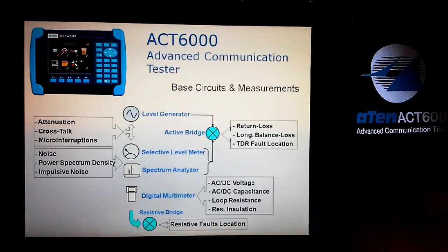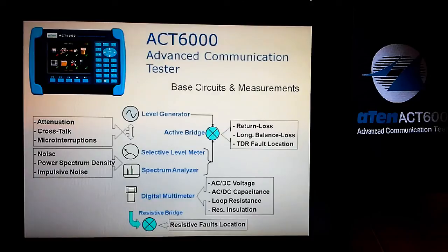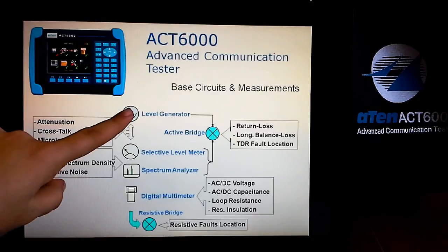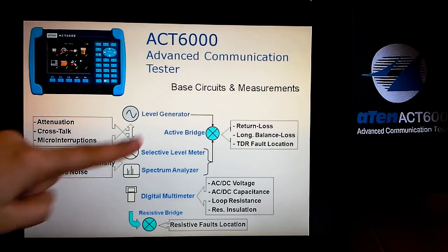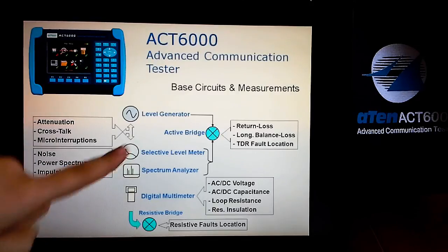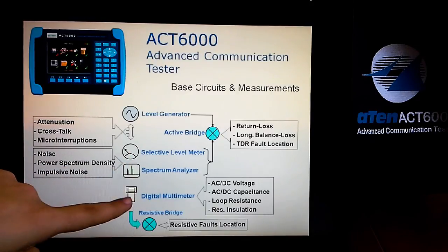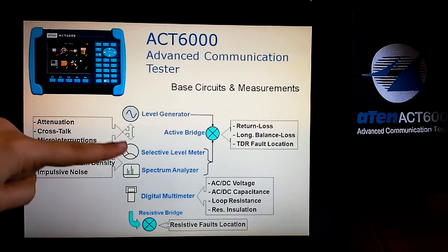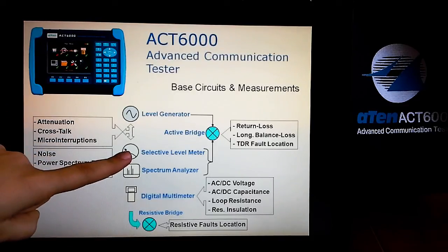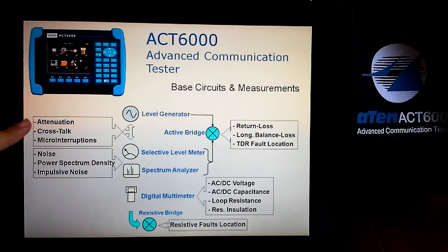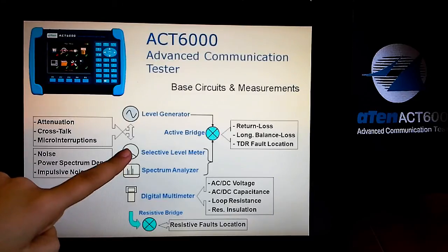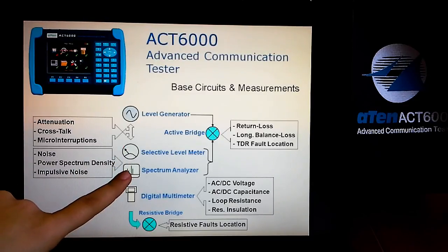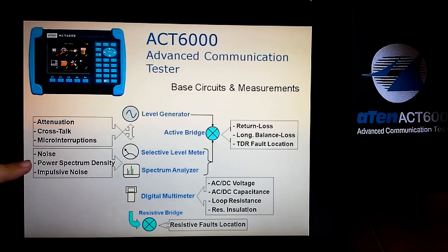The base circuits of ACT6000 are: level generator, active bridge, selective level meter, spectrum analyzer, digital multimeter, and resistive bridge. From the level generator and selective level meter, you can check attenuation, crosstalk, and micro interruptions. From the selective level meter and spectrum analyzer, you can check noise, power spectrum density, and impulsive noise.